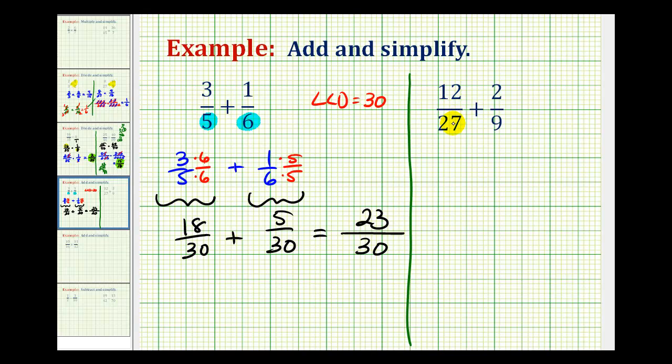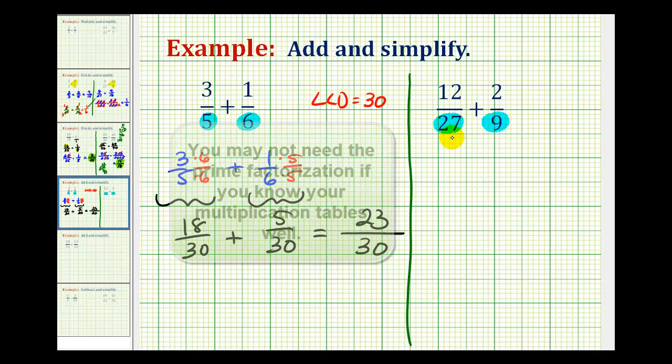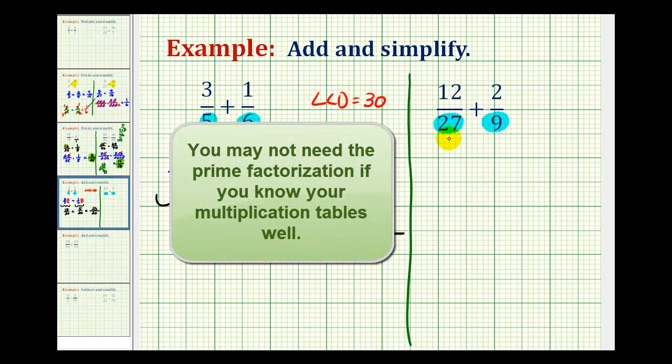In our second example, we have 12 twenty-sevenths plus 2 ninths. The first step is to determine our least common denominator, which is going to be the least common multiple of 9 and 27. This question is a little bit more challenging. What we can do is use the prime factorization of the denominators to help us determine the least common denominator.